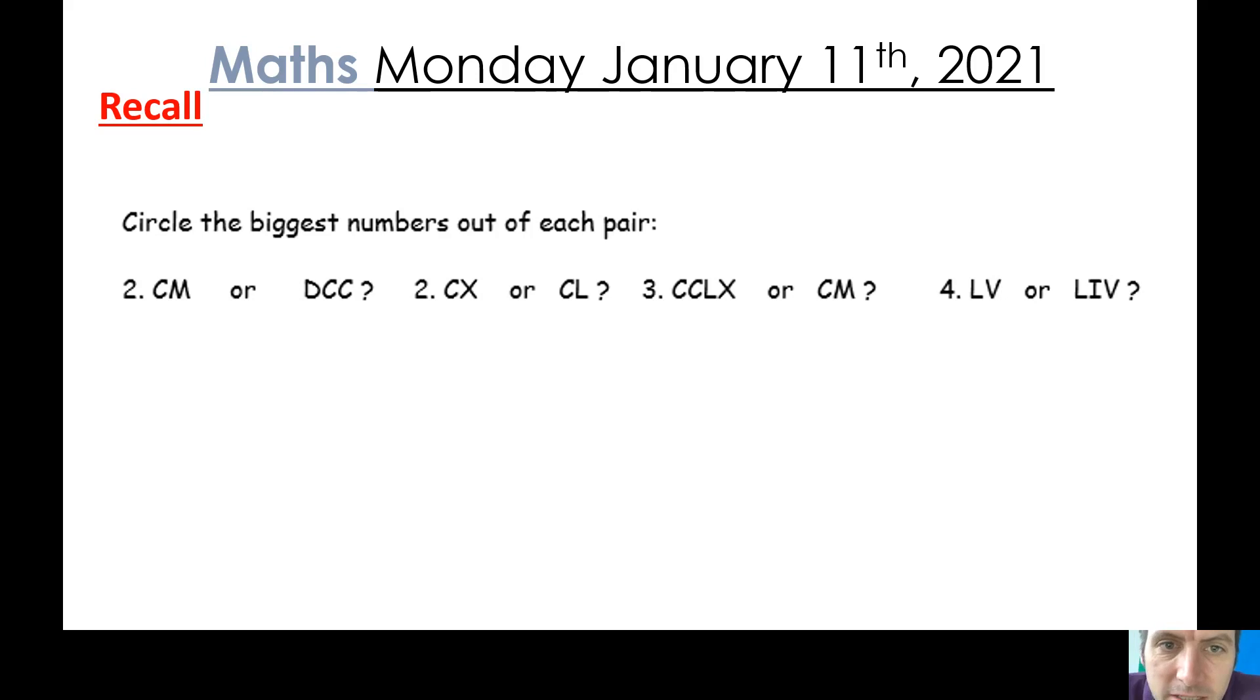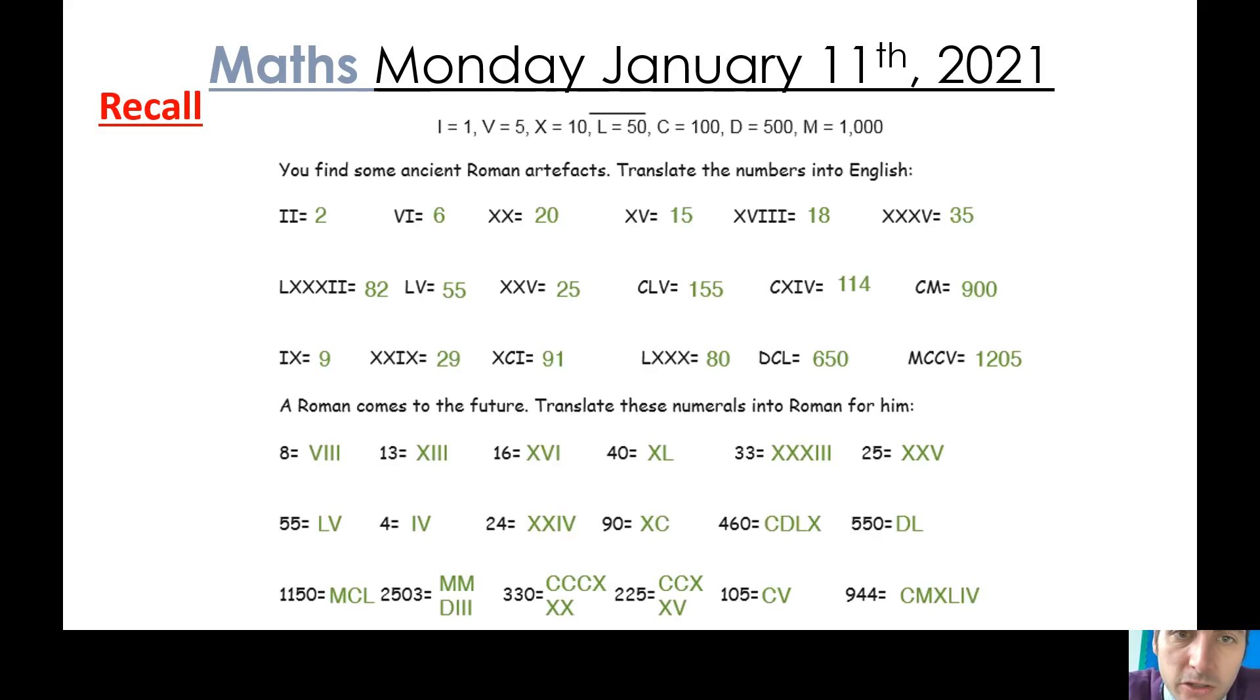So which is the greater value, the CM or DCC? So if you think back to your learning from earlier, that first one, you know that C is worth 100, D is worth 500 and M is worth 1000.